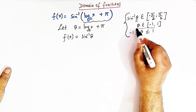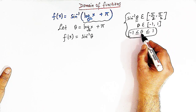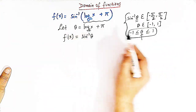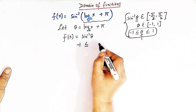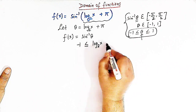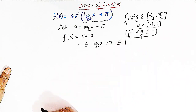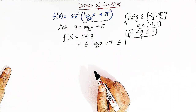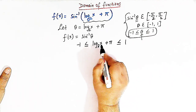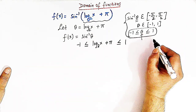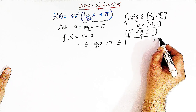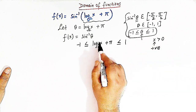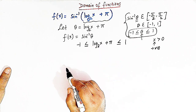So now we'll start with this inequality. Our theta is logarithm of x to the base 2 plus pi. Let us substitute this value of theta in this inequality. So we'll get: minus 1 is less than or equal to log of x to the base 2 plus pi, which is less than or equal to 1. Also, since we have a logarithm of x to the base 2, we can conclude that x should be greater than 0 — x cannot be 0 or a negative number.